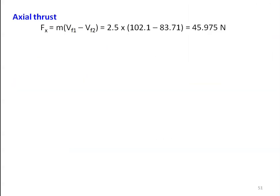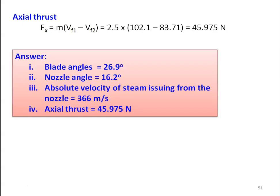Axial thrust Fx = M × (Vf1 − Vf2) = 2.5 × (102.1 − 83.71) = 45.975 Newton. Answers to the problem: blade angle 26.9 degrees, nozzle angle 16.2 degrees, absolute velocity of steam from nozzle 366 m/s, axial thrust 45.975 Newton.